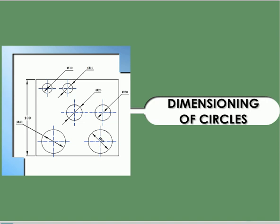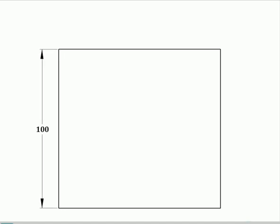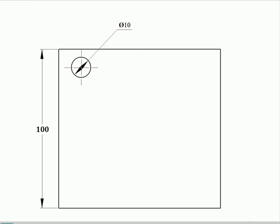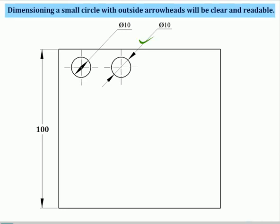Dimensioning of circles. In this, let us see how to conveniently represent the dimension of a circle. Dimensioning a small circle with arrowheads inside will lead to confusion. Dimensioning a small circle with outside arrowheads will be clear and readable.